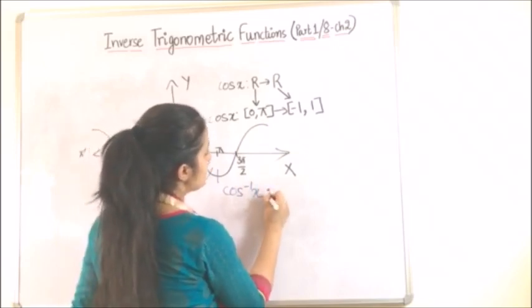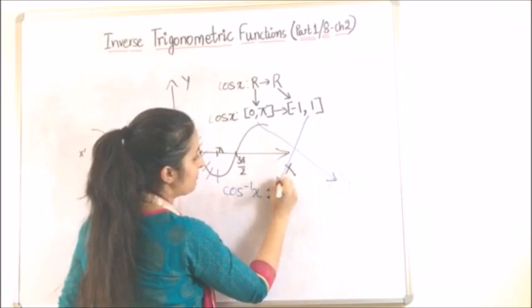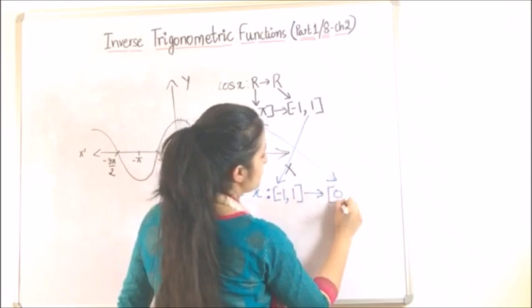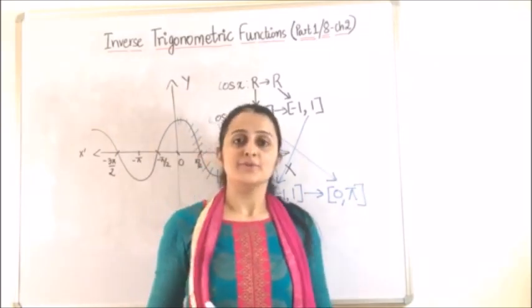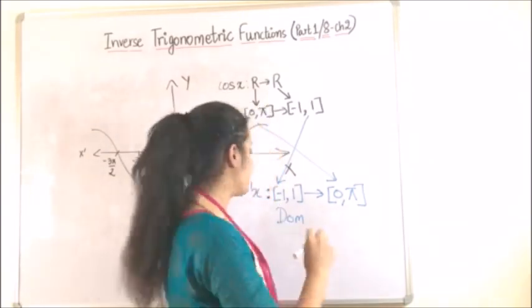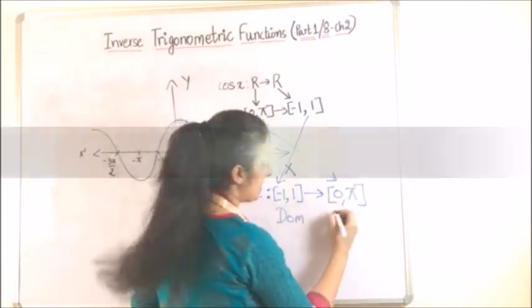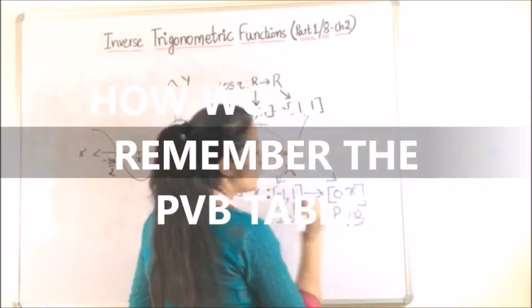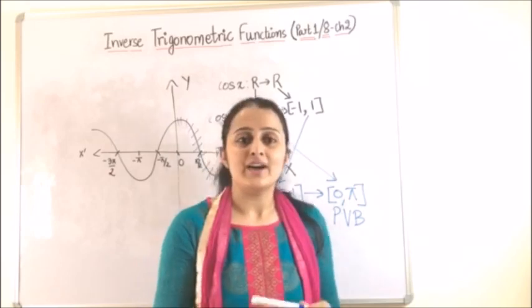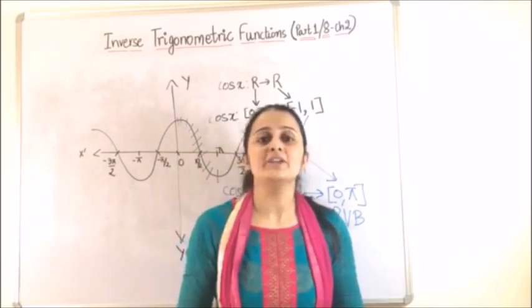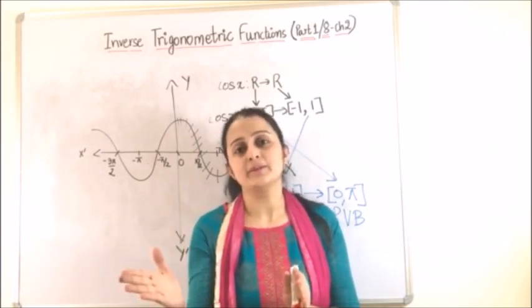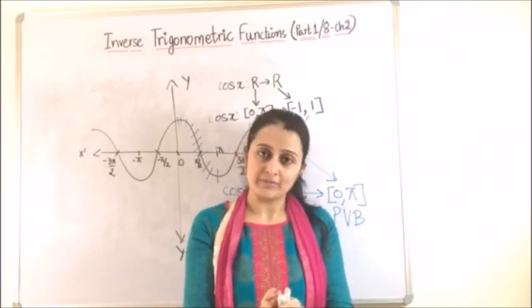Cos inverse x once again this switching happens moves from minus 1 to 1 to 0 to π. So minus 1 to 1 becomes the domain of cos inverse function and 0 to π becomes the PVB which we discussed principal value branch. Now let's try to see through the principal value branch table as to what would be the domain and the principal value branch for each of the trigonometric functions.